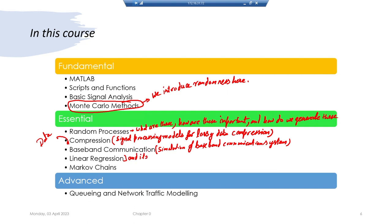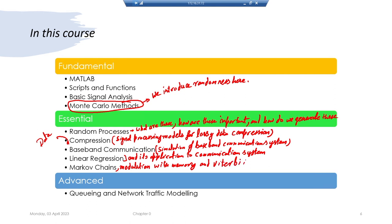We will cover linear regression and its applications to communication systems, Markov chains, modulation with memory, and Viterbi decoding. Finally, in the advanced part of the course, if and when time permits, we will do queuing and network traffic modeling. Those are the three parts of this course.